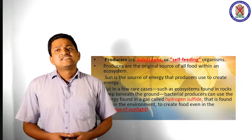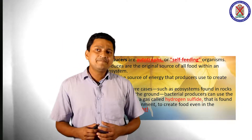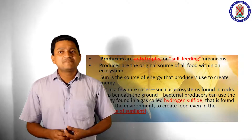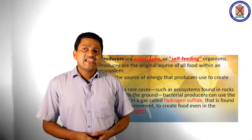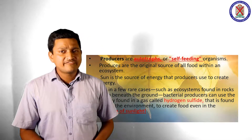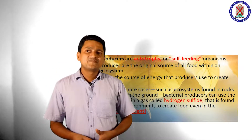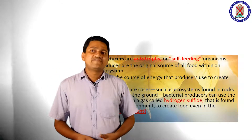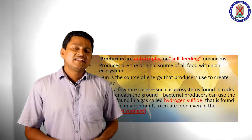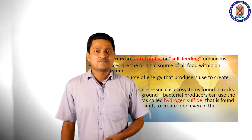The sun is the source of energy that producers use to create energy. But in a few rare cases, such as ecosystems found in rock deep beneath the ground, bacterial producers can use the energy found in a gas called hydrogen sulfide, found within the environment, to create food even in the absence of sunlight. That type of organism is mainly known as chemotrophs.